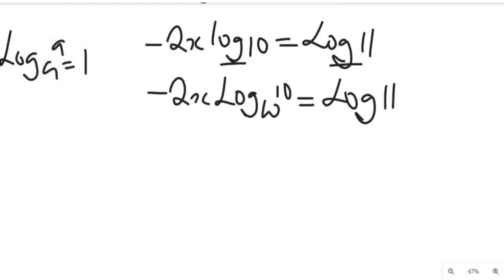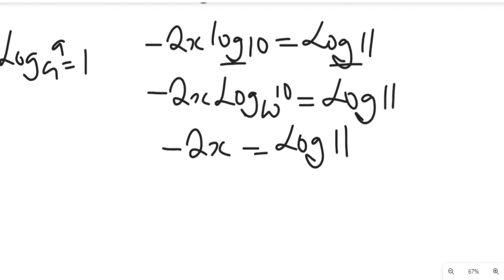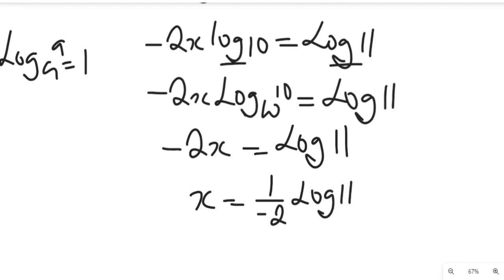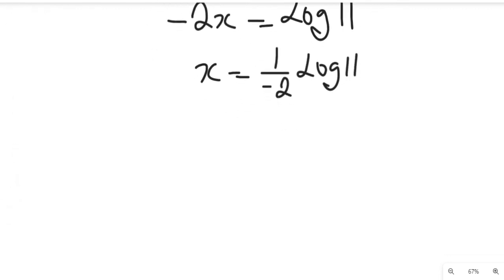Since log base 10 of 10 equals 1, the left-hand side gives us negative 2x equal to log of 11. To find the value of x we divide both sides by negative 2, so x will be equal to log of 11 divided by negative 2.